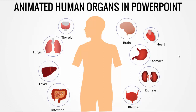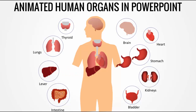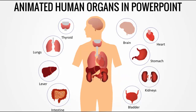Let's see how this slide works. When I click, the brain will go to the brain area, then comes the thyroid, the lungs, and the heart which is beating. Then it will show you the liver, and the stomach comes there.